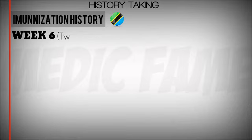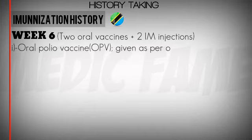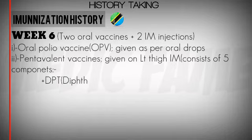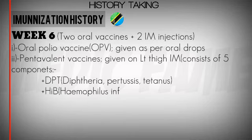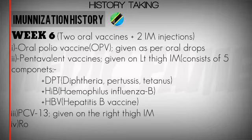At six weeks, vaccines given include oral polio vaccine, pentavalent vaccine given on the left thigh intramuscularly — which consists of diphtheria, pertussis, tetanus, Hib, and hepatitis B — PCV given at the right thigh intramuscularly, and Rotarix given as oral drops.